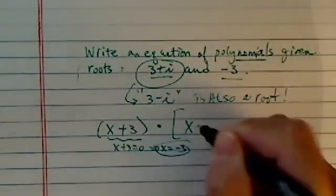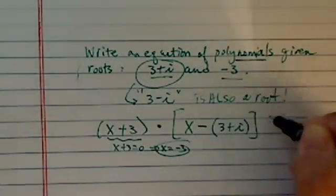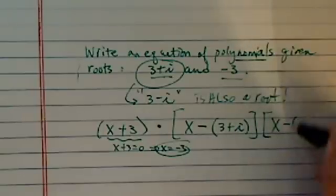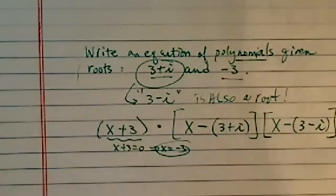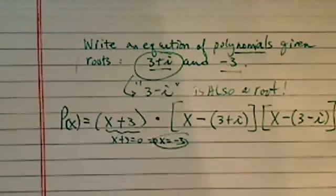Times x minus next root, which is 3 plus i, and then times x minus 3 minus i. Now, this pretty much is done. So the polynomial is degree of 3.